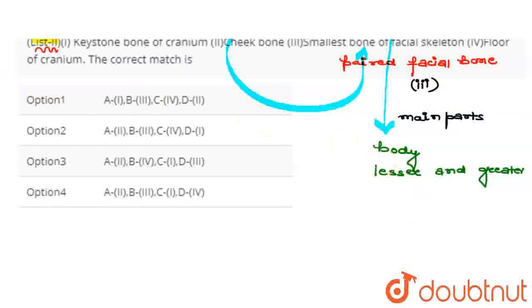which are given here: body, the body is the corpus, then there are lesser and greater wings, and there are pterygoid processes.